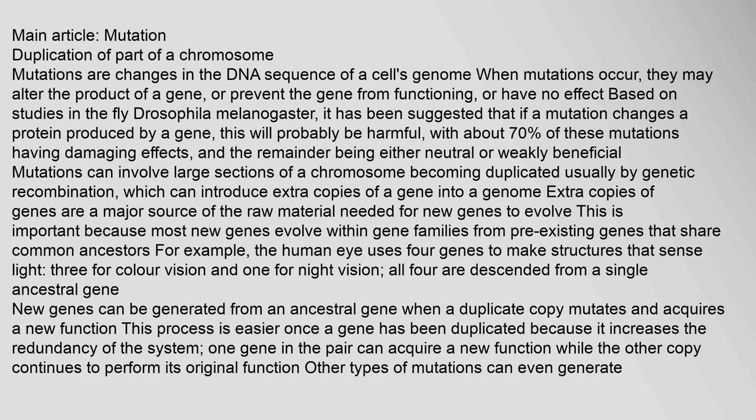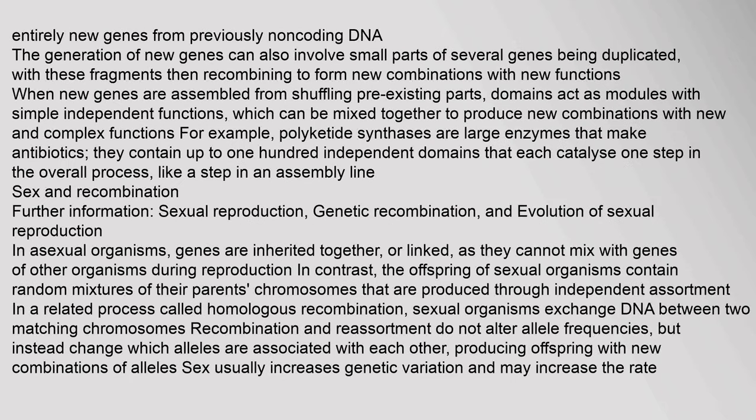Mutations can involve large sections of a chromosome becoming duplicated, usually by genetic recombination, which can introduce extra copies of a gene into a genome. Extra copies of genes are a major source of the raw material needed for new genes to evolve. Most new genes evolve within gene families from pre-existing genes that share common ancestors. For example, the human eye uses four genes to make structures that sense light — three for color vision and one for night vision — all four descended from a single ancestral gene. New genes can be generated from an ancestral gene when a duplicate copy mutates and acquires a new function.